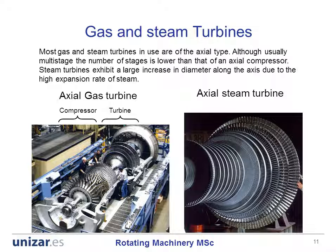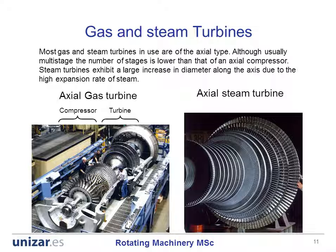Large gas and steam turbines in the tens and hundreds of megawatts size are always of the axial type. On this slide, an axial gas turbine can be seen on the left, where the compressor section, the combustion chamber section, and the axial gas turbine itself can be seen. On the right picture, an axial steam turbine can be seen. Of course, no combustion chamber nor compressor section is visible because there is no such equipment ahead of a steam turbine. A characteristic of steam turbines is that due to the large expansion rate of steam, the last stages are of considerably larger diameter than the previous stages.